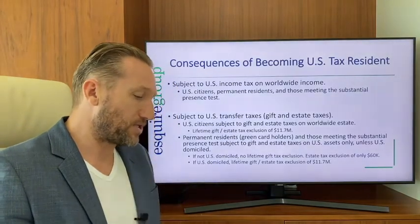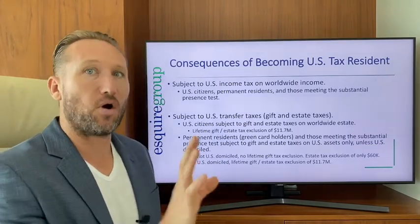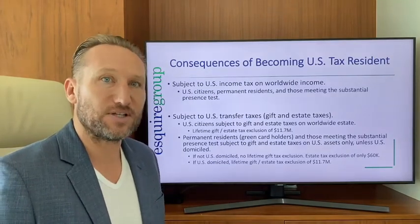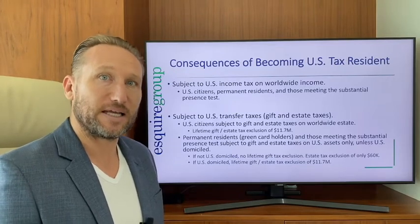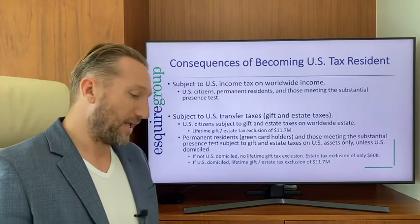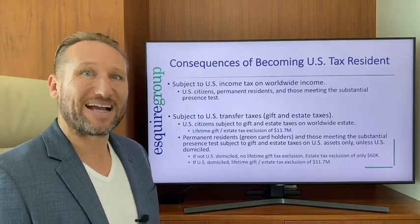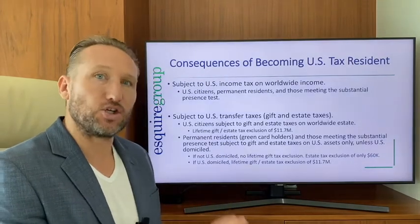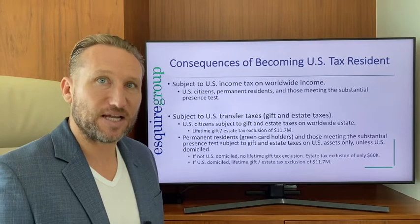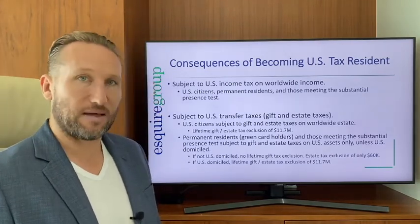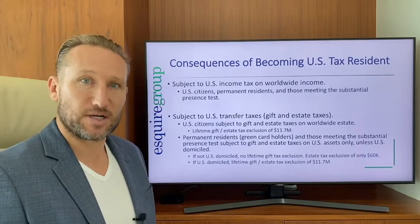Permanent residents and those meeting the substantial presence test who are not domiciled in the U.S. are only liable for gift and estate taxes on U.S. assets. They don't have any lifetime gift tax exclusion on gifts of U.S. assets, so the gift tax applies from $1. They get a $60,000 estate tax exclusion — everything over that is subject to U.S. estate tax, which goes up to 40%. If they are domiciled in the U.S., then they have the same lifetime gift and estate tax exclusion as U.S. citizens, which is currently $11.7 million.